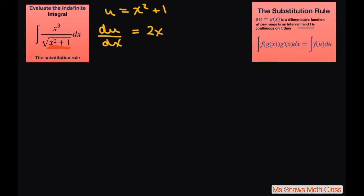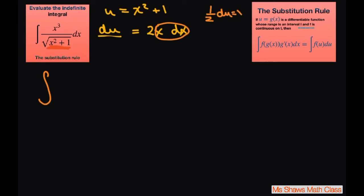Go ahead and cross multiply so that dx is on the other side. Now we're going to solve for x dx. We get 1 half du equals x dx.